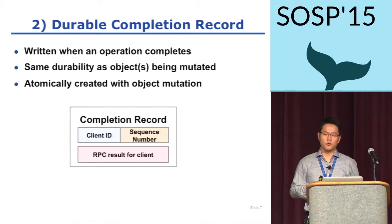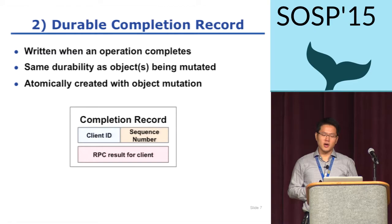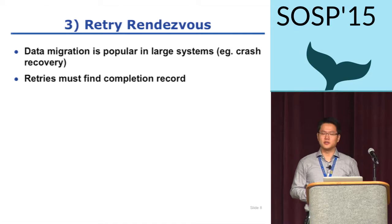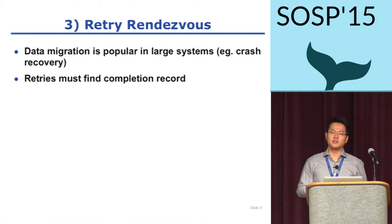After detecting a retry with the unique RPC ID, a server should respond with the original result. To do so, we must save the RPC result durably as an operation completes. The completion record has two components: RPC ID and RPC result to be returned to the client. The completion record should be as durable as the data and must be created atomically with the mutation of the data. Without a completion record, a server cannot find the response for retries, so every retry should find its completion record if one exists.